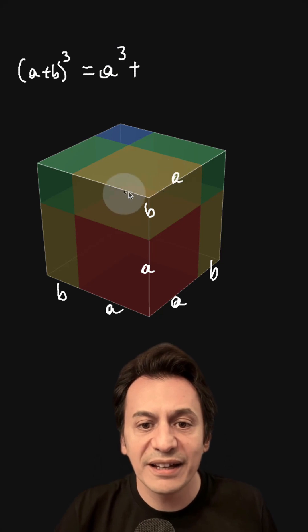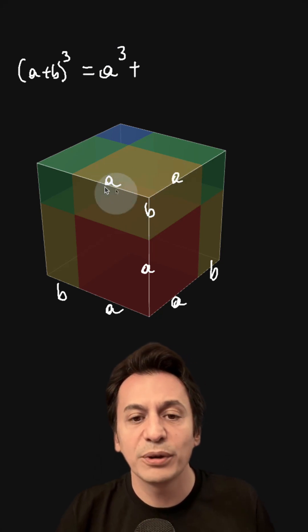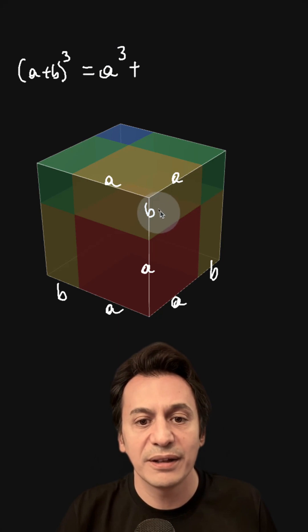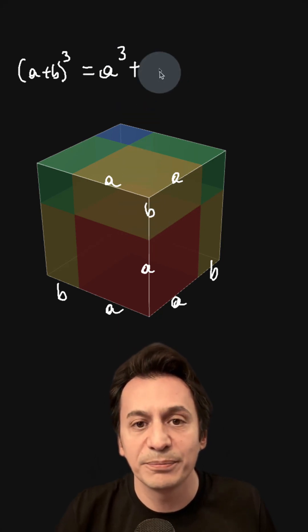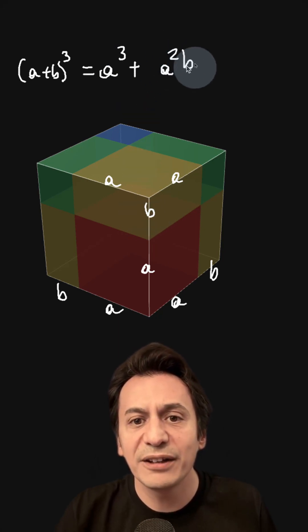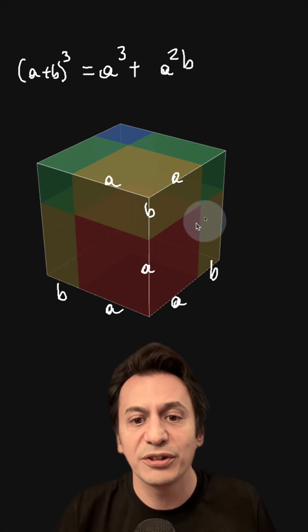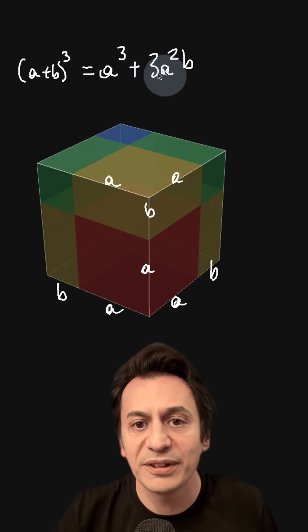Now let's calculate the volume of the yellow piece. This side is A, and this side is also A. Therefore, its volume is A times A times B, which is A squared B. But something catches my attention. There are three of these yellow pieces here, so we have 3A²B.